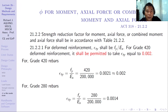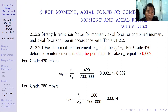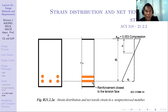Note that for Grade 280 rebars, εty is different: fy of 280 divided by 200,000 gives 0.0014. Depending on the reinforcement you are using, you need to use the proper values. Take note that ECI is using Grade 420 for this particular case, so be careful.